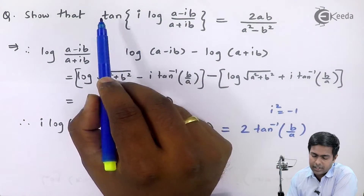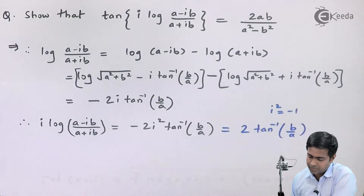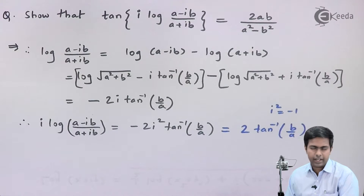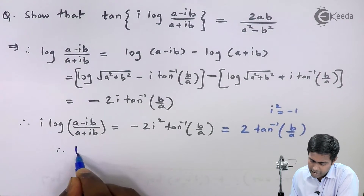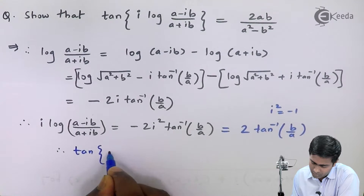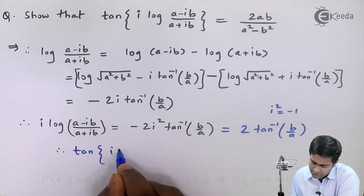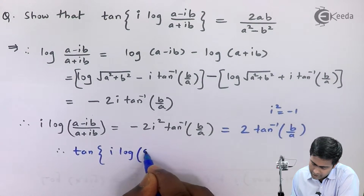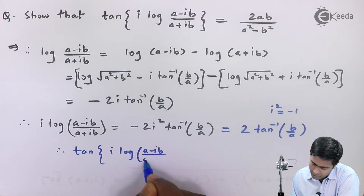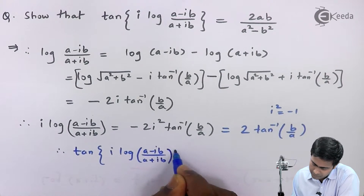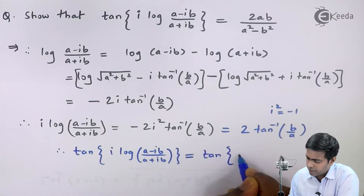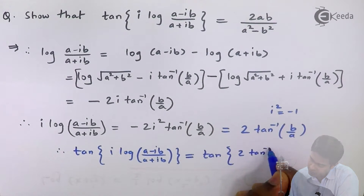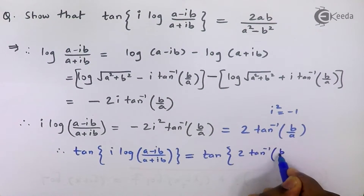Now we take tan of both sides. Therefore, tan of i·log((a - ib)/(a + ib)) is equal to tan of 2·tan⁻¹(b/a).